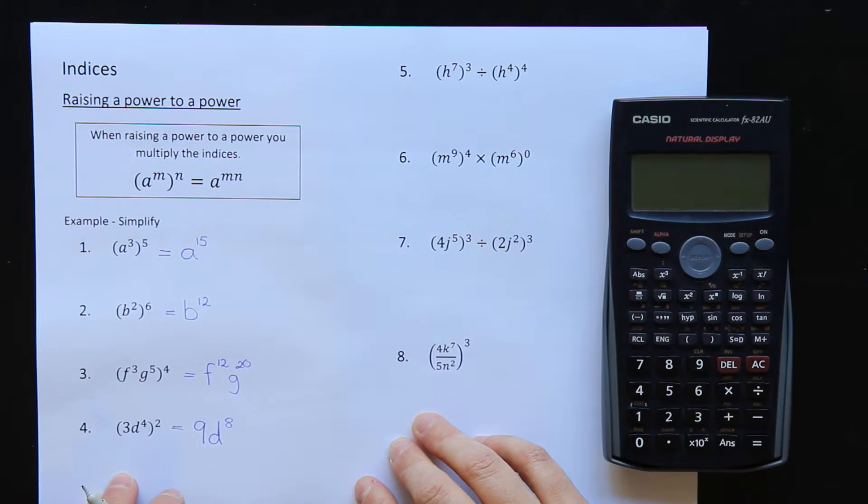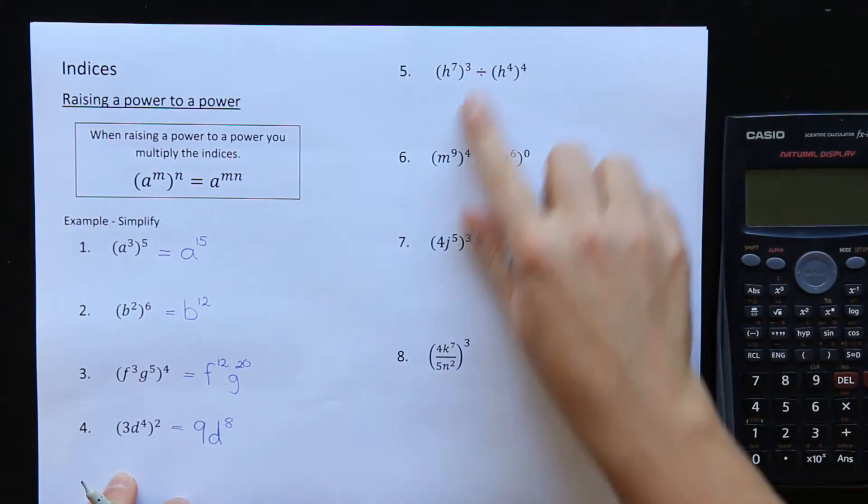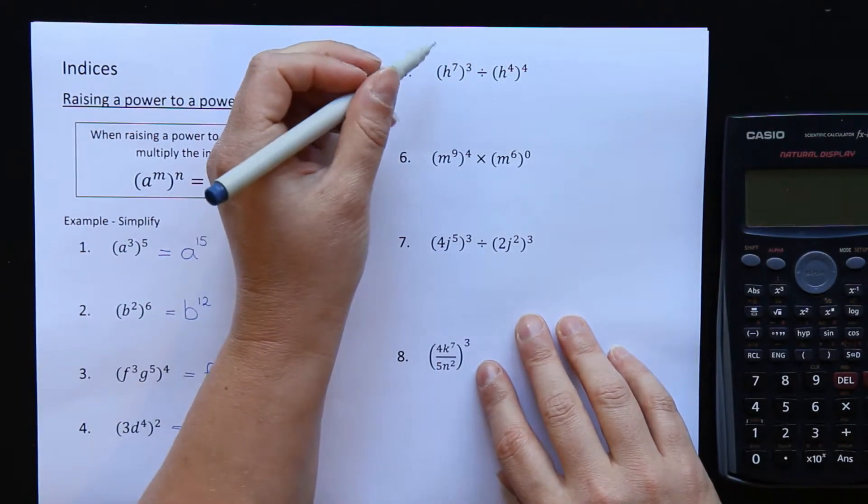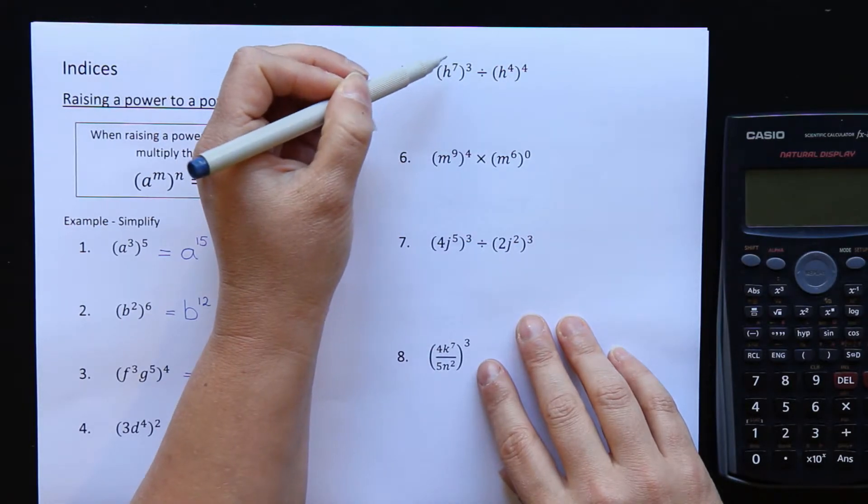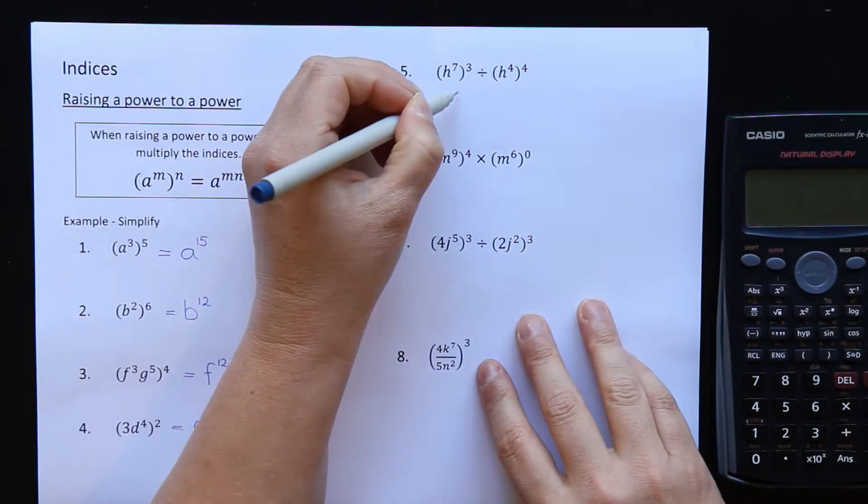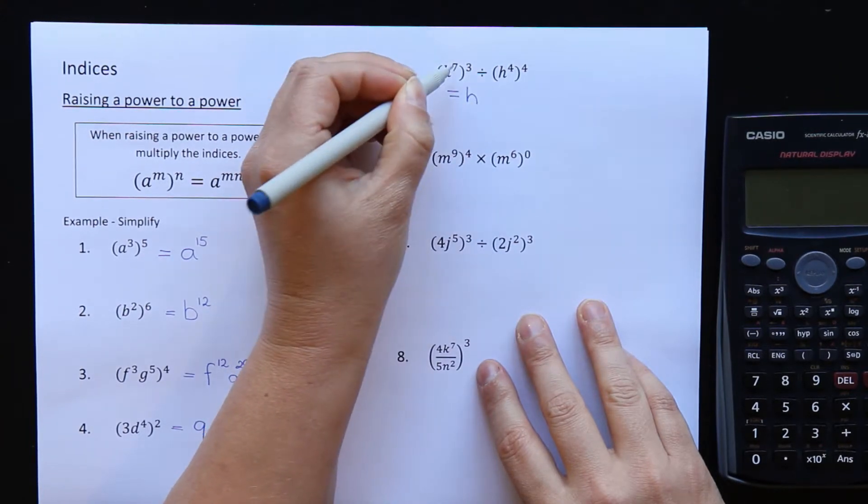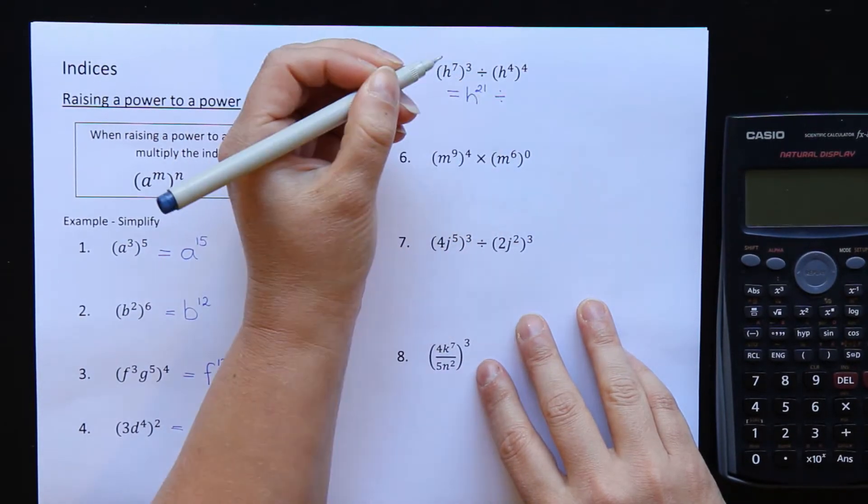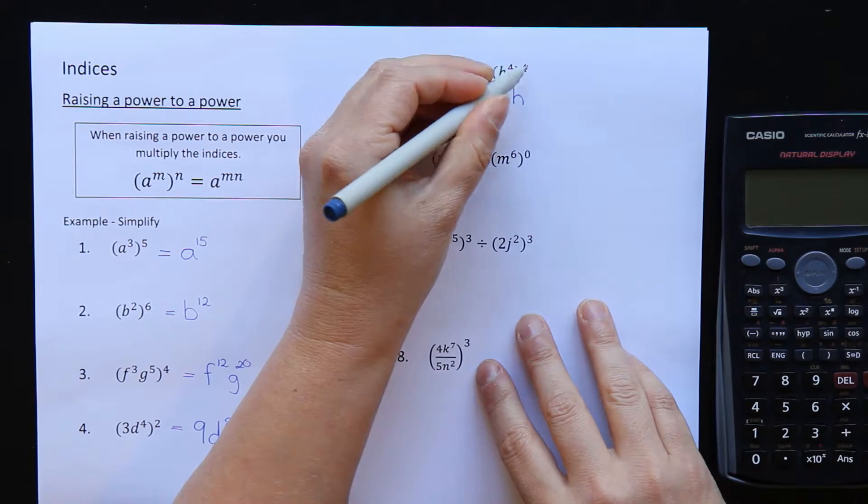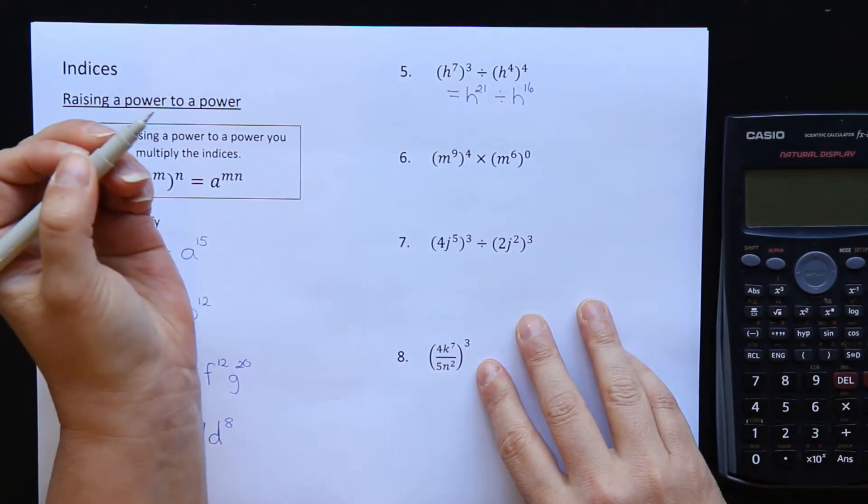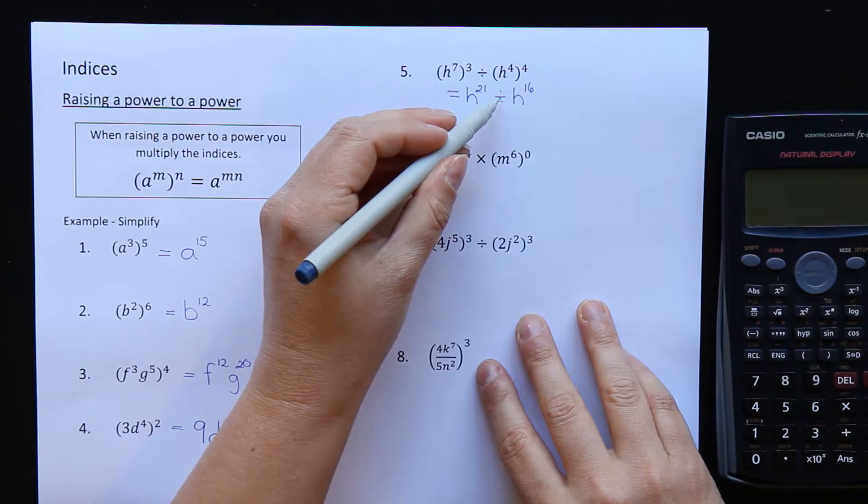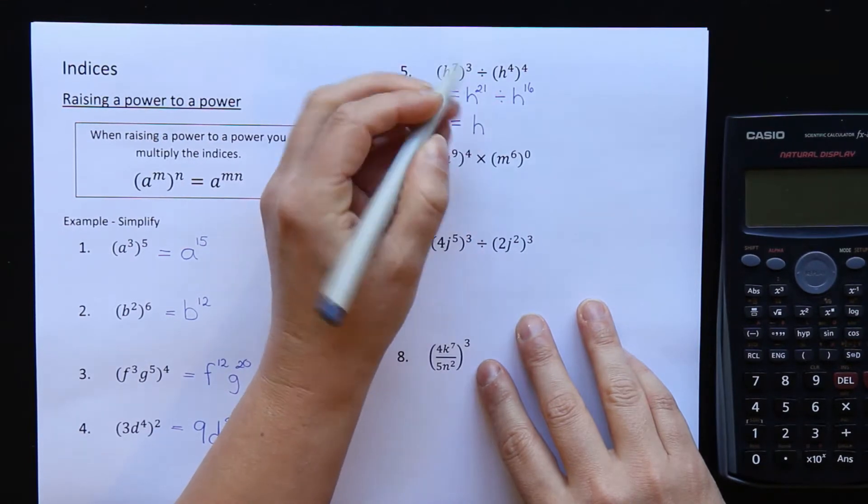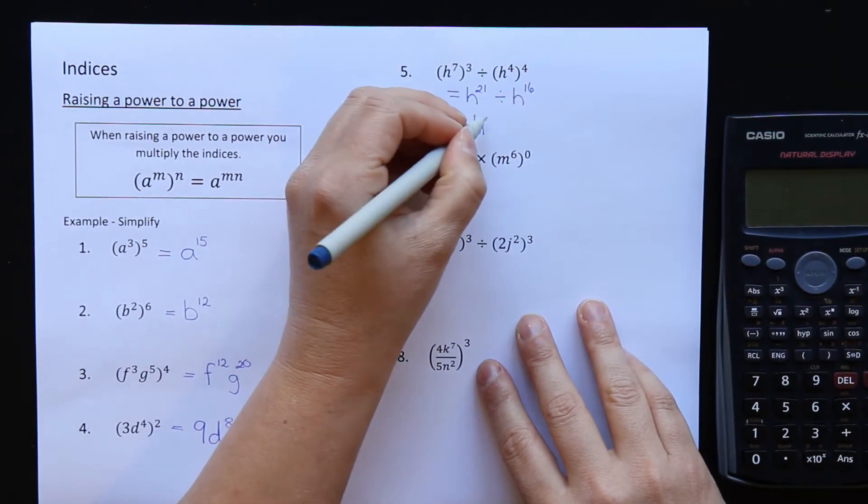Okay, once you've kind of mastered that, then we can start doing some combinations of some different index laws that we've learnt here. So in question 5, first of all, I want to expand these brackets using the power of the power rule. So h is the base times the powers. 7 times 3 is 21. I want to divide that by, h is the base again. 4 times 4 is 16. Now, when you're dividing indices, you subtract the powers. So h is the base. 21 minus 16 is 5.